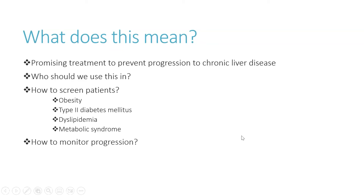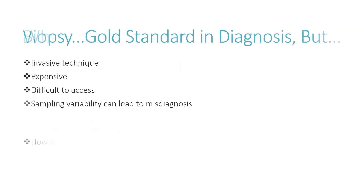An important consideration is how we monitor progression. Biopsy is the gold standard in diagnosis; however, it can be difficult to use being that it is an invasive technique. It is also dangerous with risks for complications, expensive with costs generally between $1,500 to $4,000, and difficult to access, requiring appointments with a hepatologist. Additionally, sampling variability can lead to misdiagnosis, as steatosis and fibrosis may not affect the liver uniformly, so you may not get an accurate picture of overall liver health.